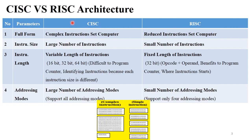So here is the difference between CISC and RISC. The first point is the full form. The full form of CISC is Complex Instruction Set Computer, and RISC is Reduced Instruction Set Computer. The name suggests that CISC architecture has a large number of instructions, while Reduced Instruction Set Computer suggests that a small number of instructions carry this architecture.